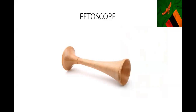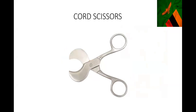Everyone knows what this is - we don't need to go around talking about it. This is your fetoscope. This is a cord scissors. A cord scissors should never be missed because it has that round cutting part. We don't cut the cord with a straight scissors because it slides on the cord. This cord scissors is shaped so that when you are cutting a round cord, it doesn't slide over it - it just cuts it.